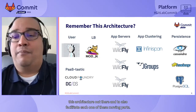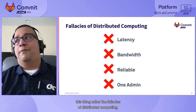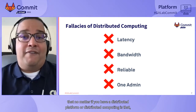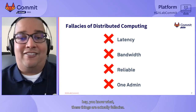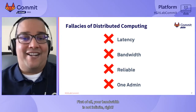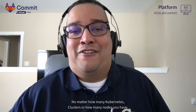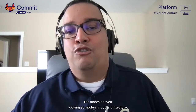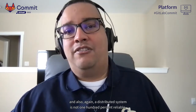Like any distributed system, there are the fallacies of distributed computing — developed by engineers at Sun Microsystems — which state that no matter your distributed platform, these assumptions are false. Your bandwidth is not infinite; you have caps. A big one is latency: no matter how many Kubernetes clusters or nodes you have, there's still going to be latency between the distributed nodes, including between availability zones.